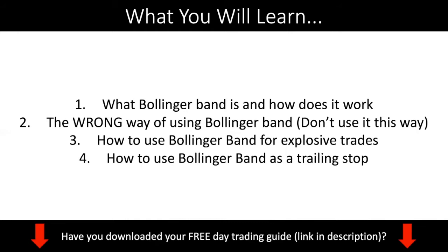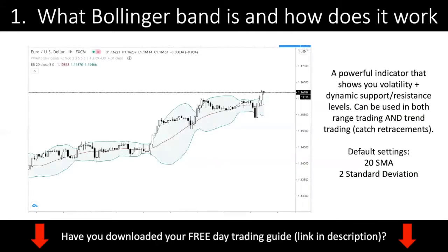Let's go into what Bollinger Bands is and how it works. The platform I'm using is TradingView, which is a free web-based charting platform. You just have the indicator placed on the chart. In this case, I'm using the default settings: 20 simple moving average and two standard deviations. This is the typical setting that most brokers and platforms use, so when you set it up, you don't really need to adjust it much.